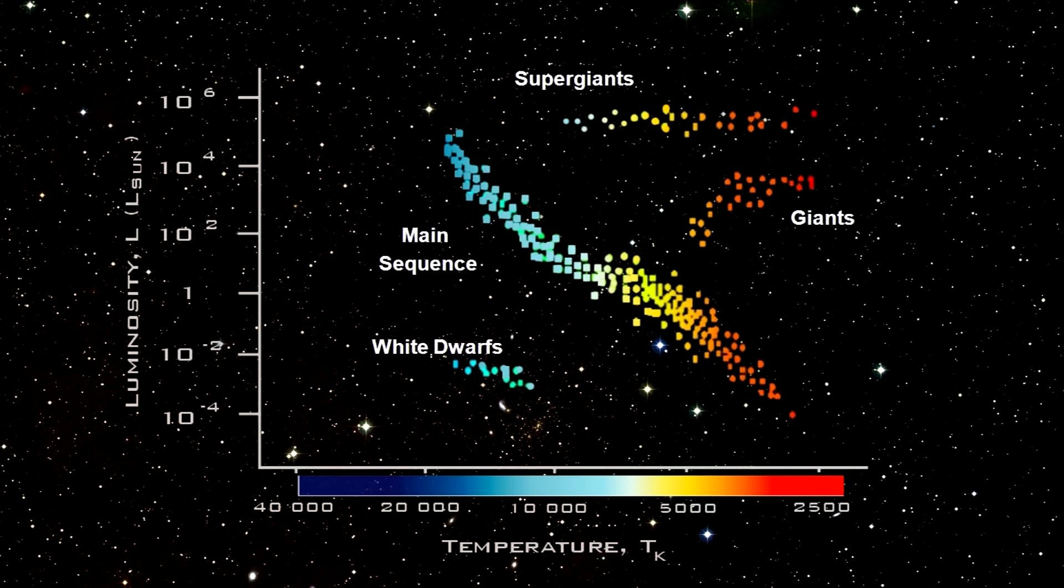If stars everywhere behave like the stars in our neighborhood, then the HR diagram can show us how far away they are. Astronomers call this technique spectroscopic parallax. But we'll just stick with HR diagram. Now let's return to stargazing. We'll start with our old friend, Betelgeuse.